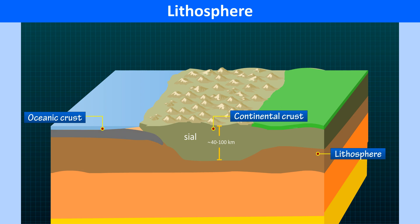The oceanic crust is the lower crust and is found below the oceans as well as under the sial. It is also called sima as it is made up of silica and magnesium. It is much thinner with an average thickness of just 6 km. The level of seawater remains the same everywhere.